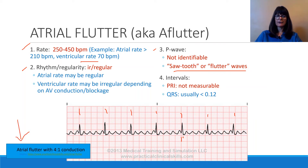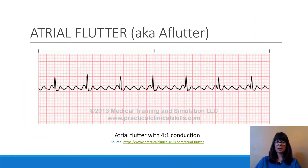This is labeled as atrial flutter with 4-to-1 conduction, which means there are four flutter waves or P waves before every QRS — one, two, three, four P waves to every QRS. Here is a bigger picture of this atrial flutter rhythm strip, and again, these classical sawtooth appearances are very hard to miss.